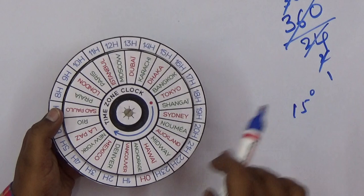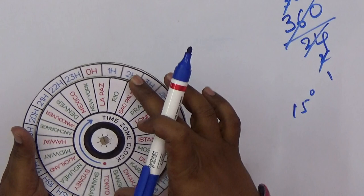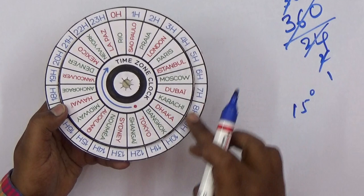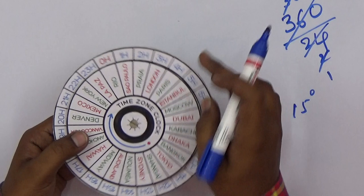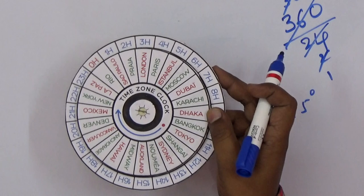In Rio, if it's exactly 12 o'clock at night, you can find the time in the remaining 23 countries. This time zone clock allows you to find the times in other countries when you're in one location. This is the sample project.